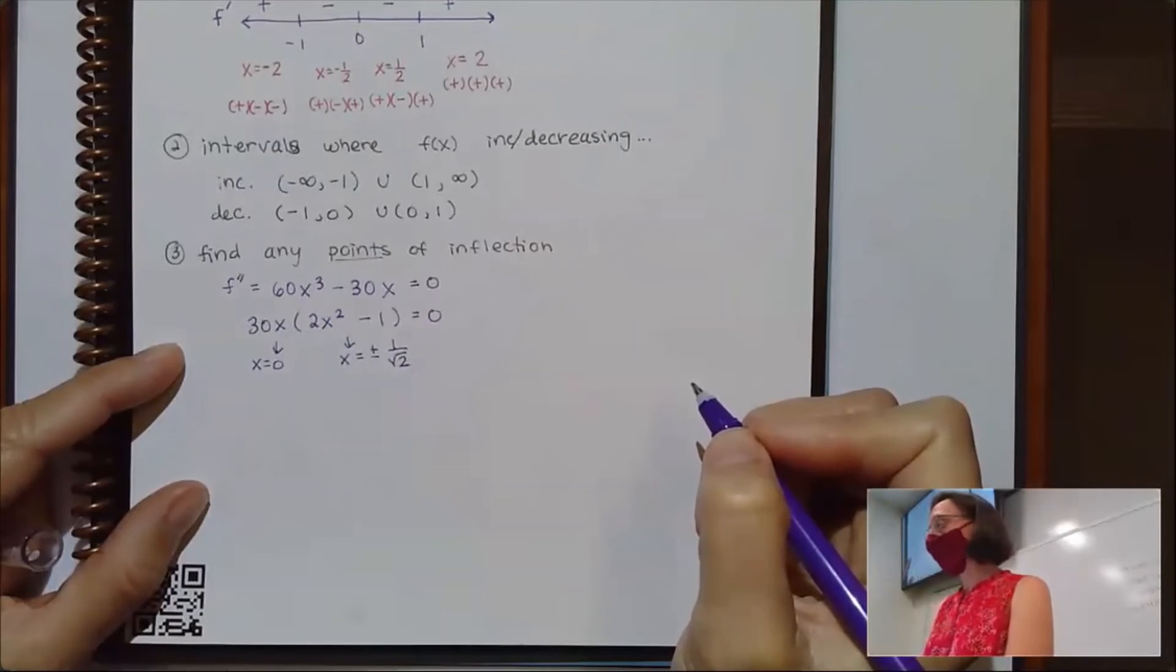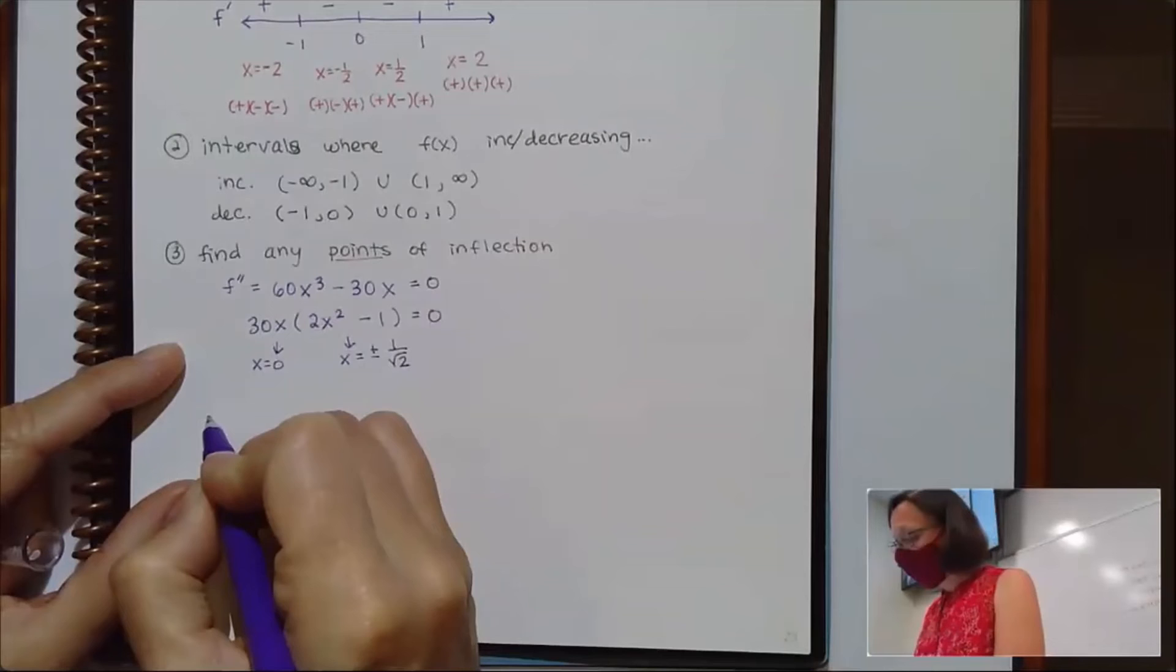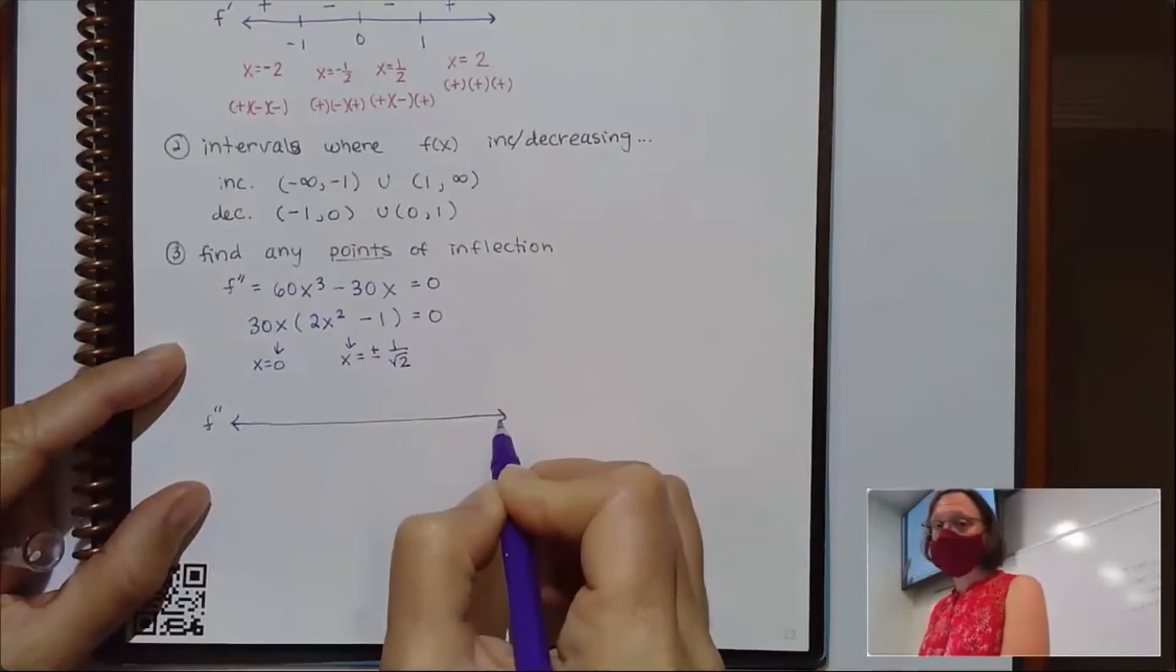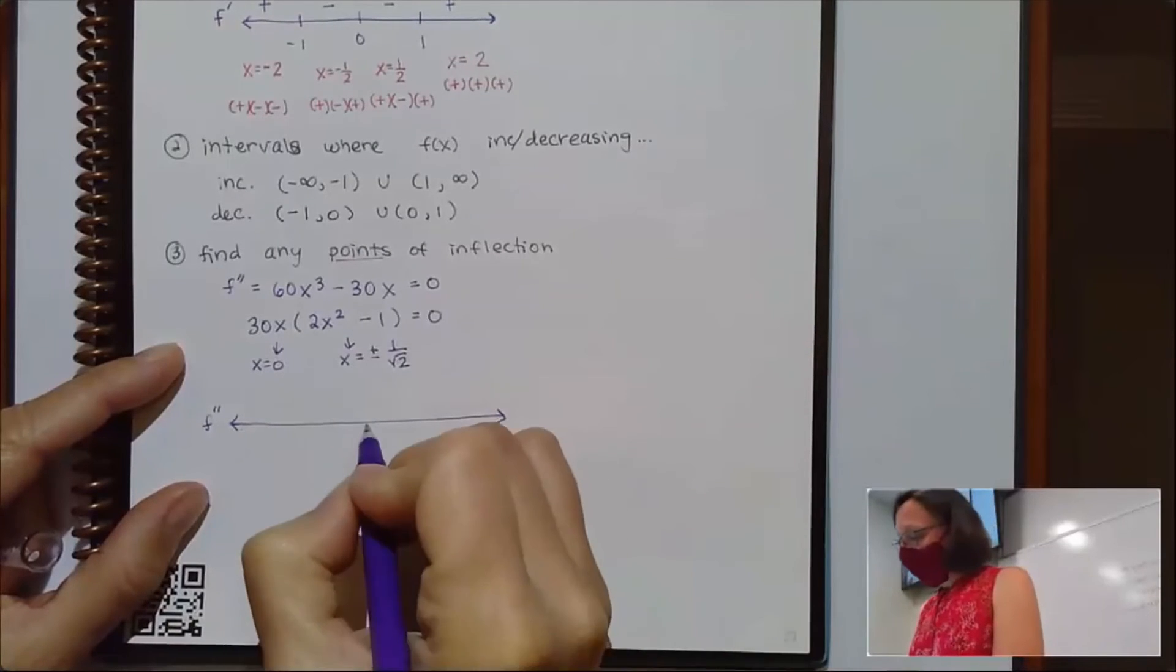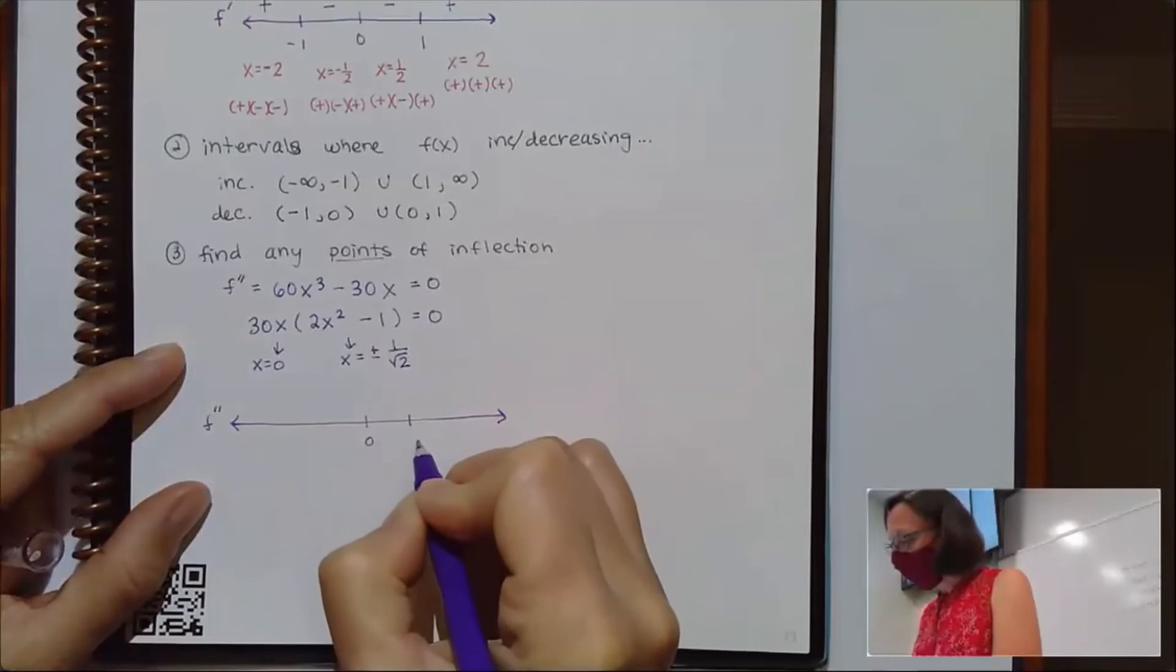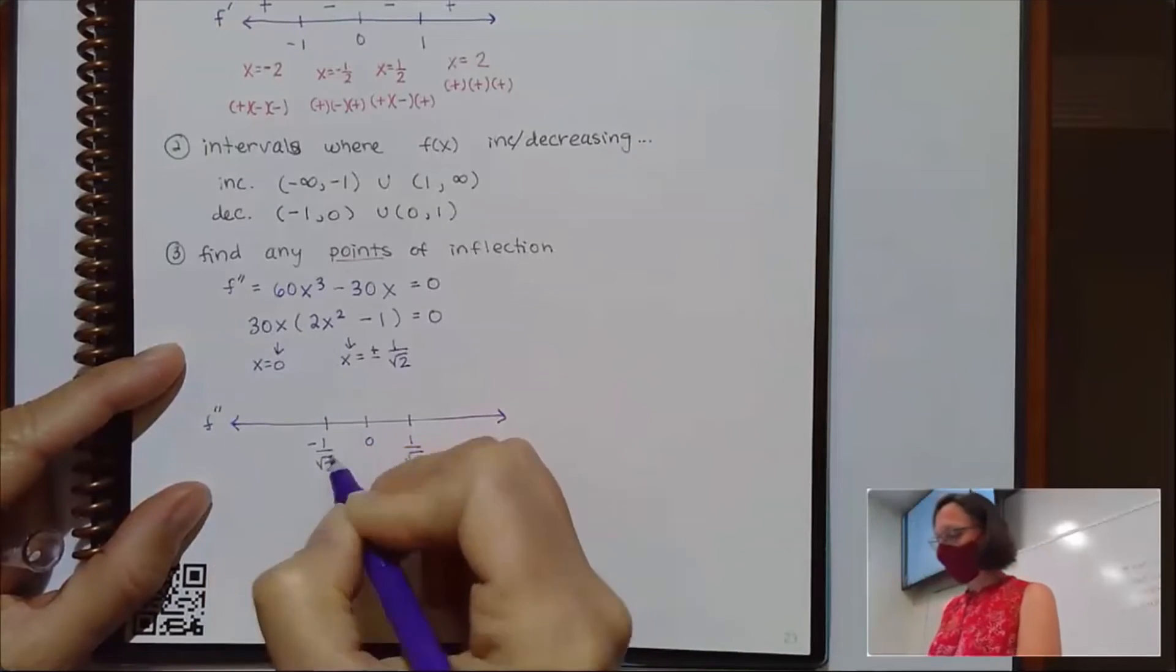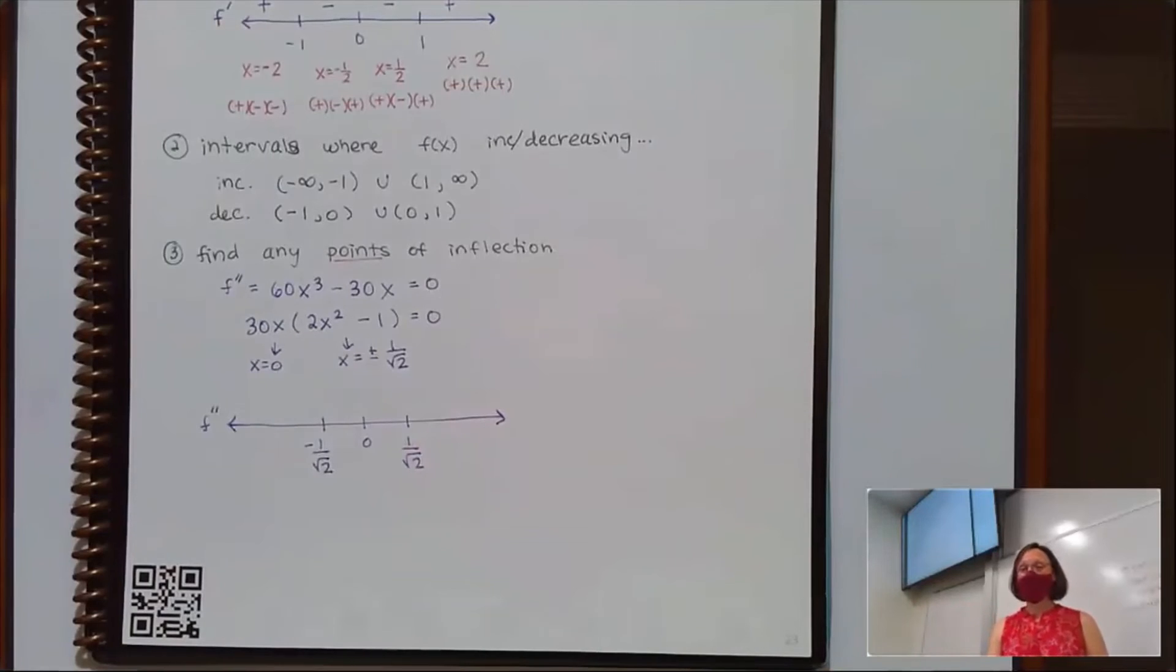And this is going to give me that x is equal to plus or minus 1 over the square root of 2. So if I choose to do a number line, I'm going to label my number line for my second derivative. I'm looking at 0, positive 1 over square root of 2, negative 1 over the square root of 2. And now I'd be thinking about plugging in some test points. Should I give everybody a minute to try plugging in test points or should I just do them together because the numbers are messy? I got some votes for together on Zoom.